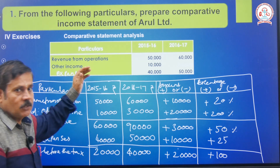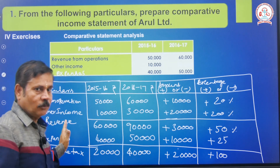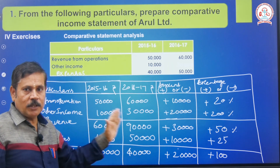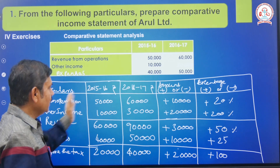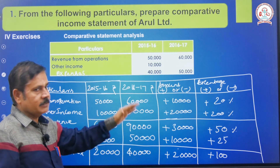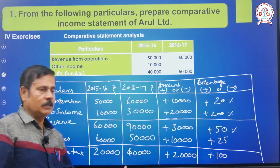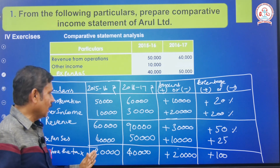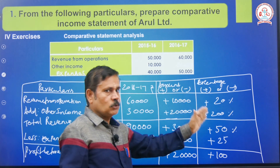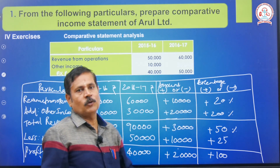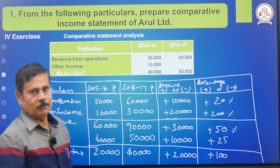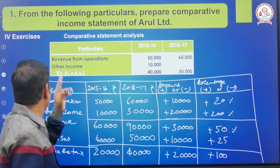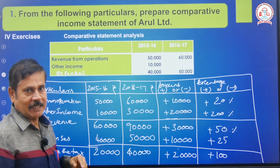So, in the comparative statement, we put two years of values and find the increase or decrease value. The first year value is the base. The percentage is the difference amount divided by the base year value into 100. We will move on to the second tool next.